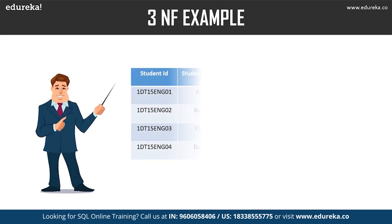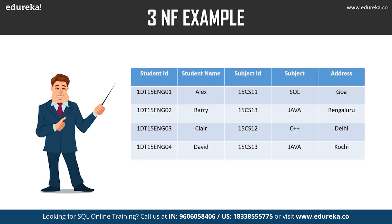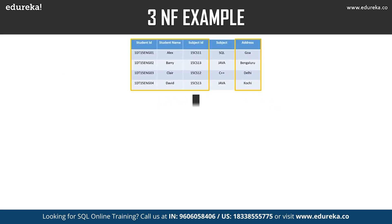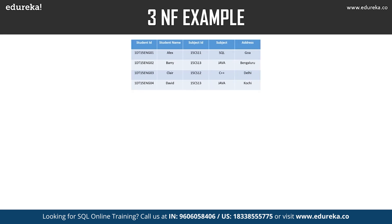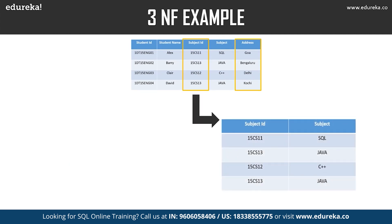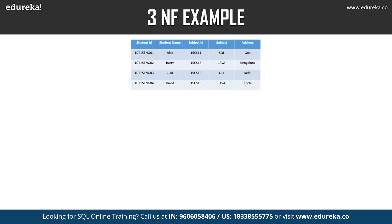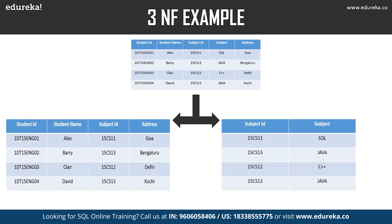In our example table, student ID determines subject ID and subject ID determines subject. Therefore, student ID determines subject via subject ID, which implies a transitive functional dependency — this table does not satisfy the third normal form. To achieve third normal form, we divide the table into two parts. The first table stores student ID, student name, subject ID, and address, where all columns refer to the primary key student ID. The second table has subject ID and subject, where subject is dependent only on subject ID and not on student ID. All non-key attributes are now fully functionally dependent on the primary key of their respective tables.